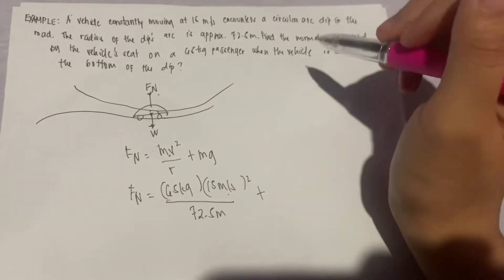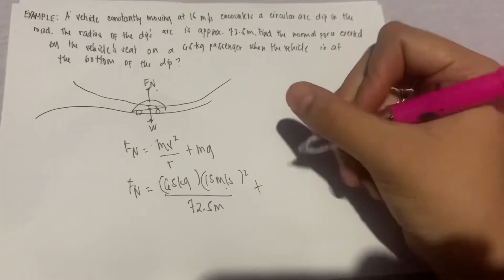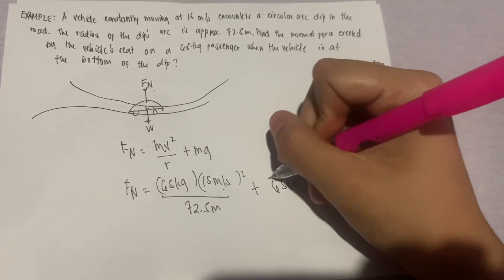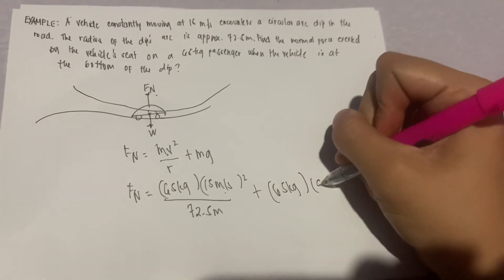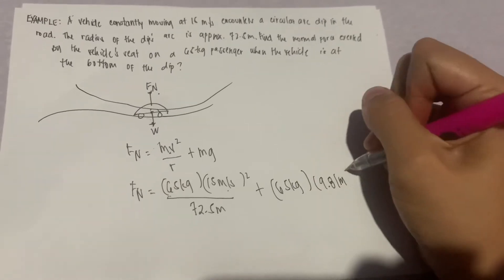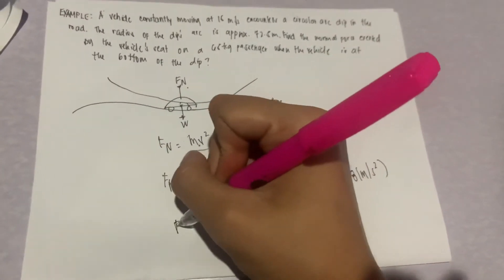and yung radius natin na 72.5 meters plus mass ulit na 65 kilograms times the gravity, 9.81 meters per second squared. So by calculating the values,